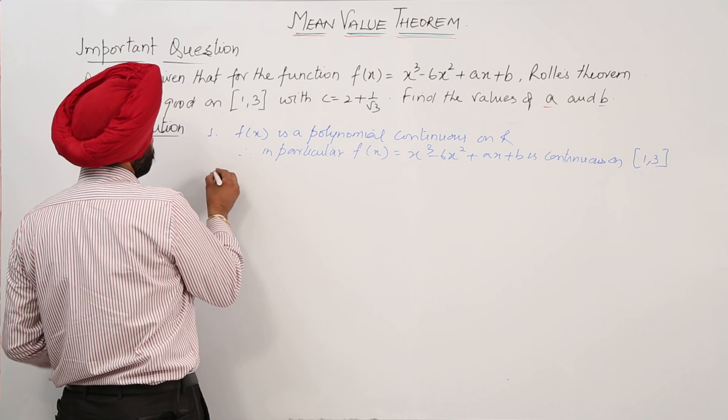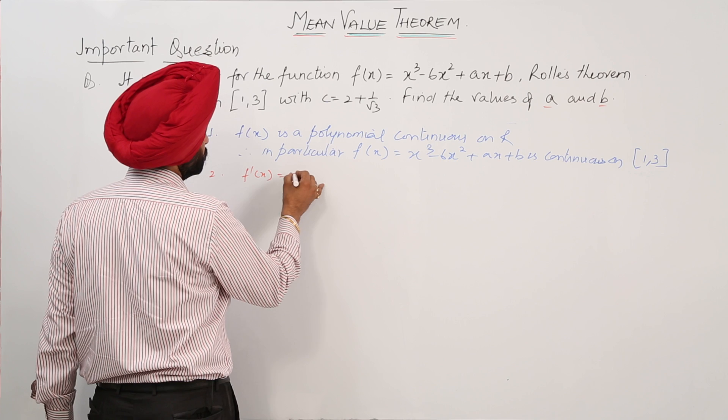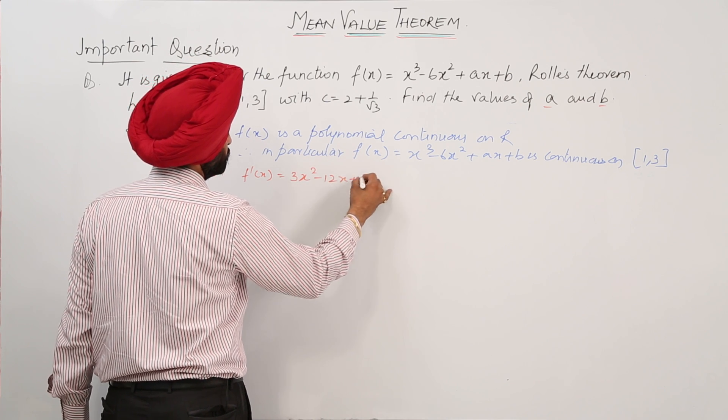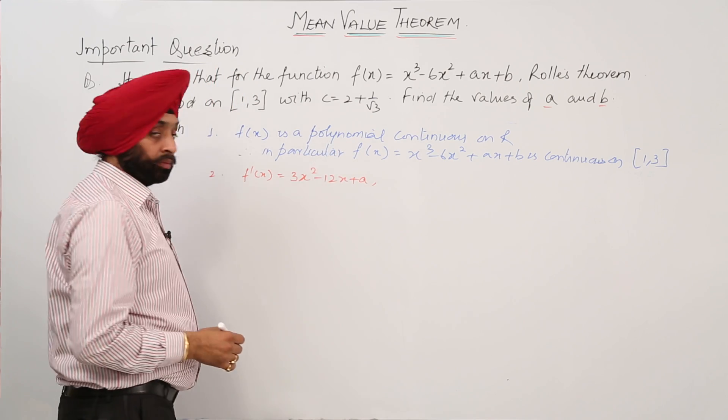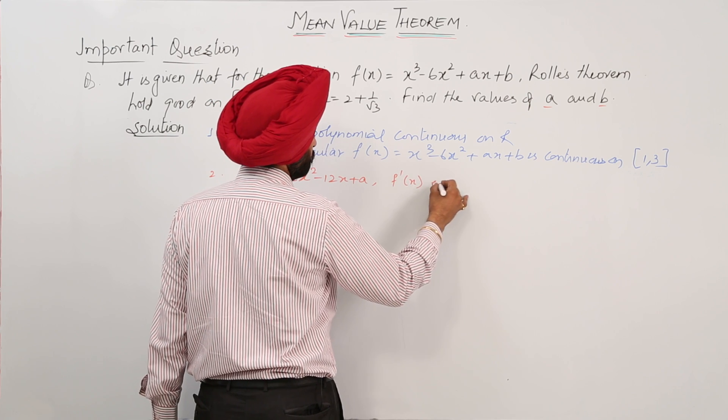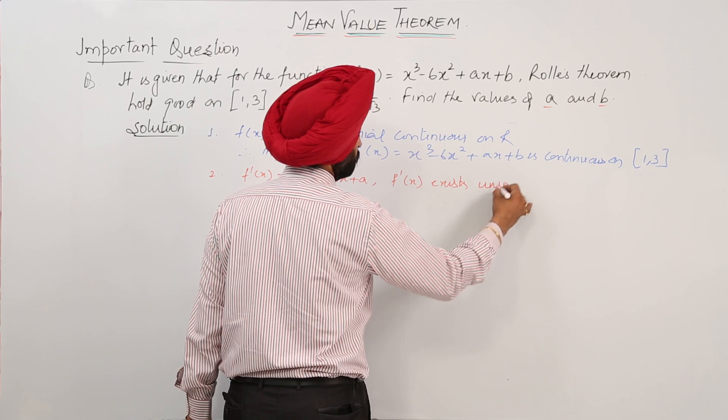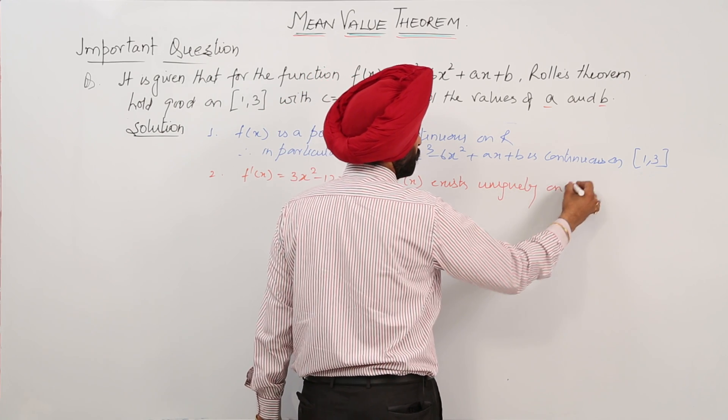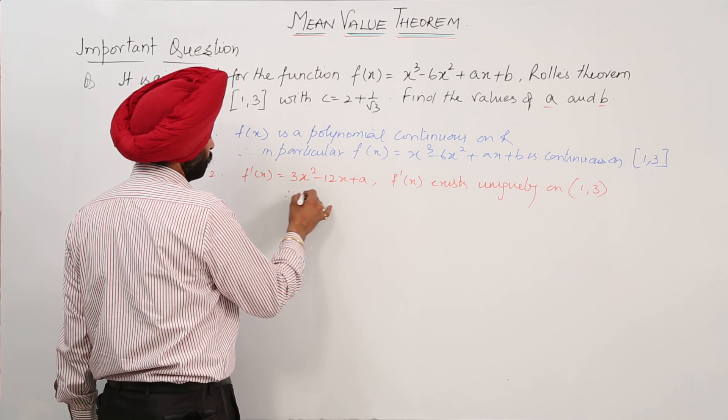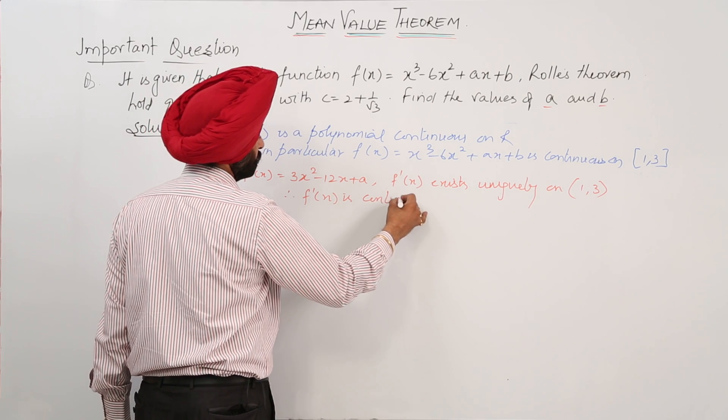Number 2, step number 2: f'(x) = 3x² - 12x + a. Now, f'(x) exists uniquely on open interval (1, 3). Therefore, f'(x) is continuous.